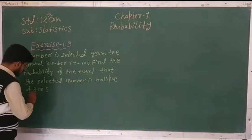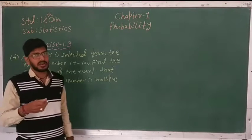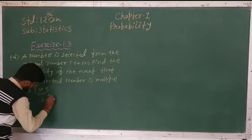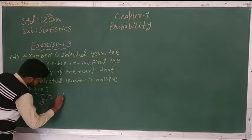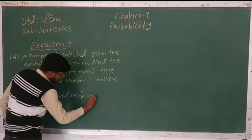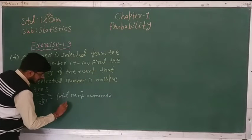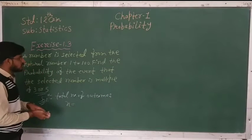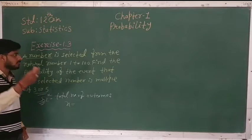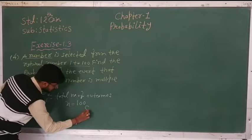First of all we have to find the total number of outcomes. n is equal to — we have to select one number from 100 numbers. So we can write 100C1, which is equal to 100.